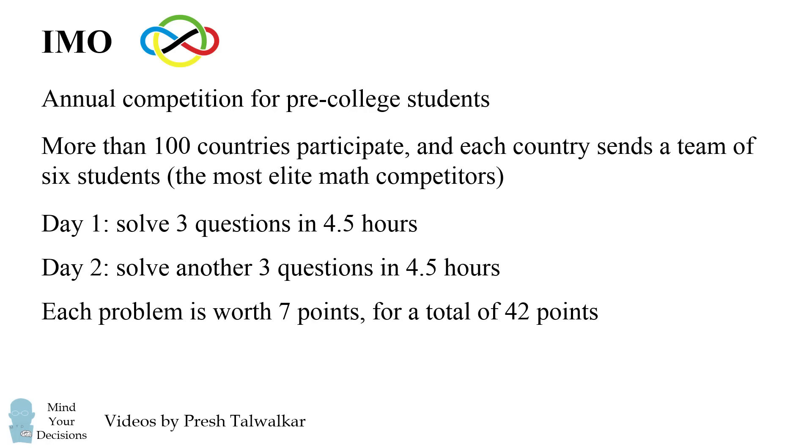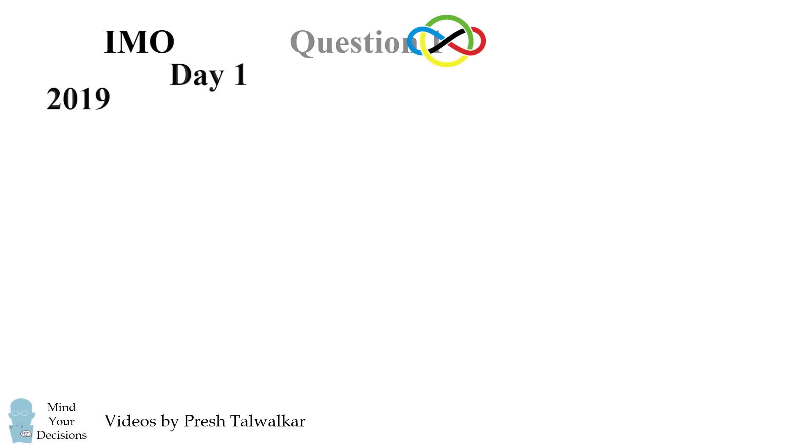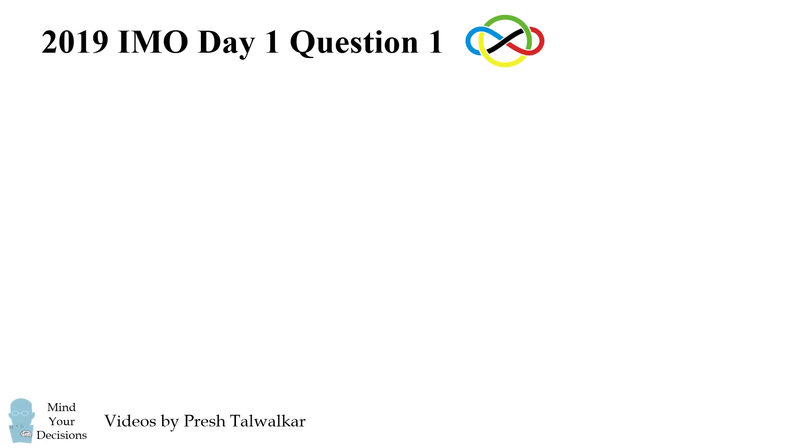Each problem is worth seven points for a total of 42 points. In 2019, the individual mean score was about 16 points, but there were students who got a perfect paper with 42 points. This problem comes from day one, question one.